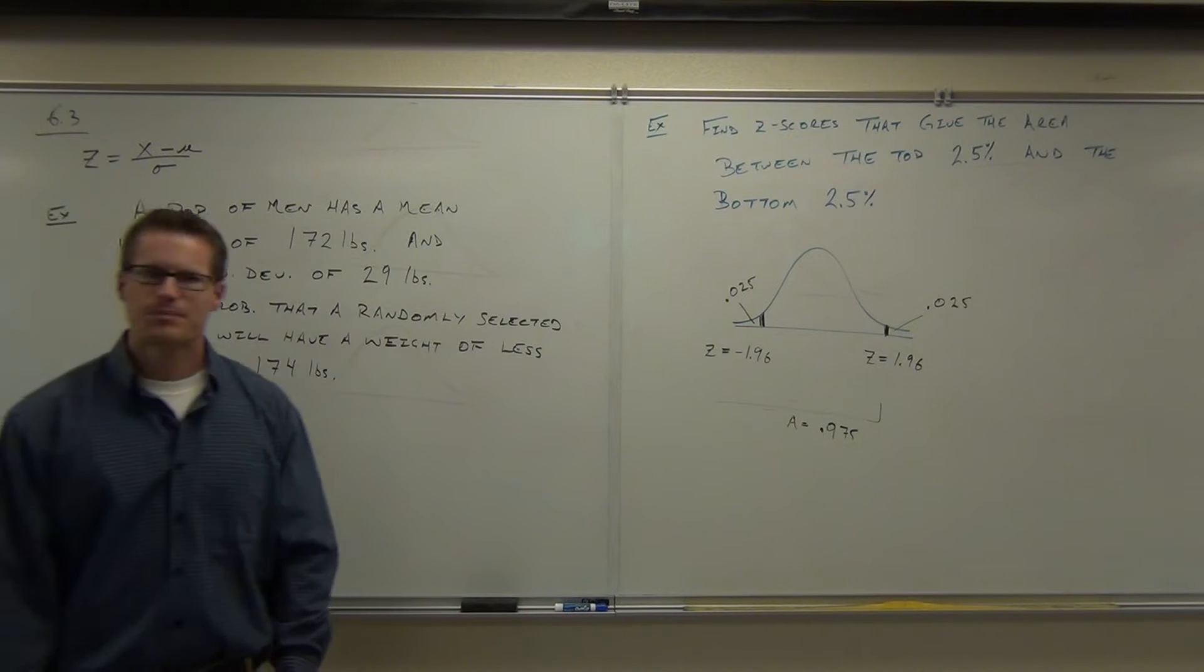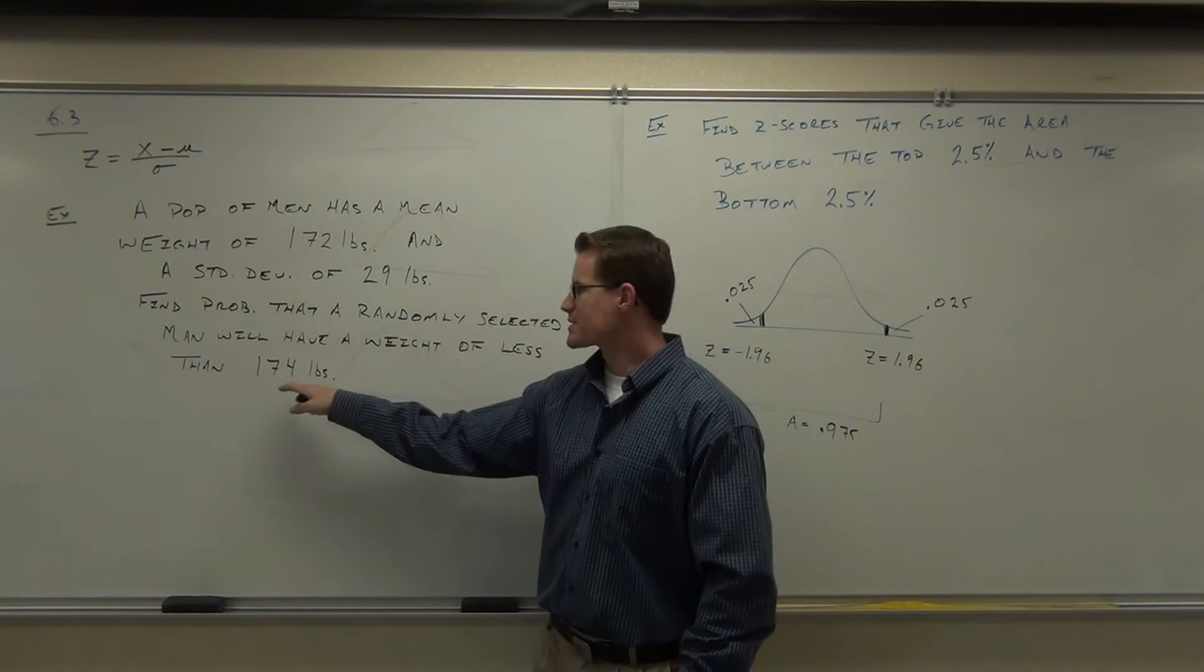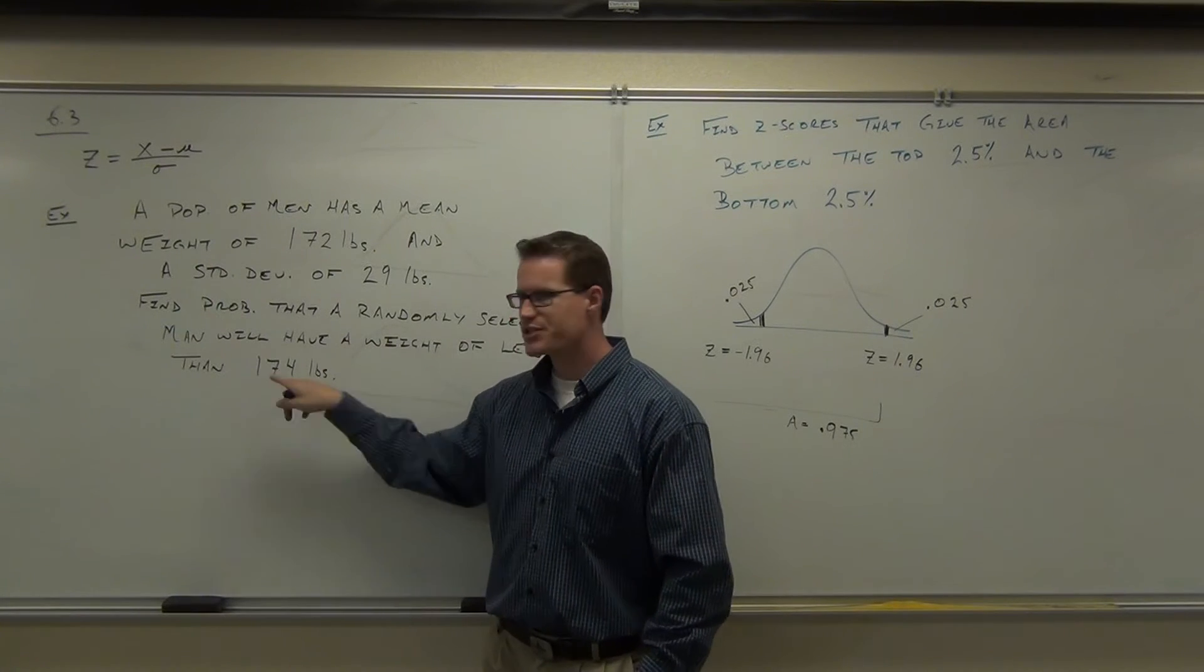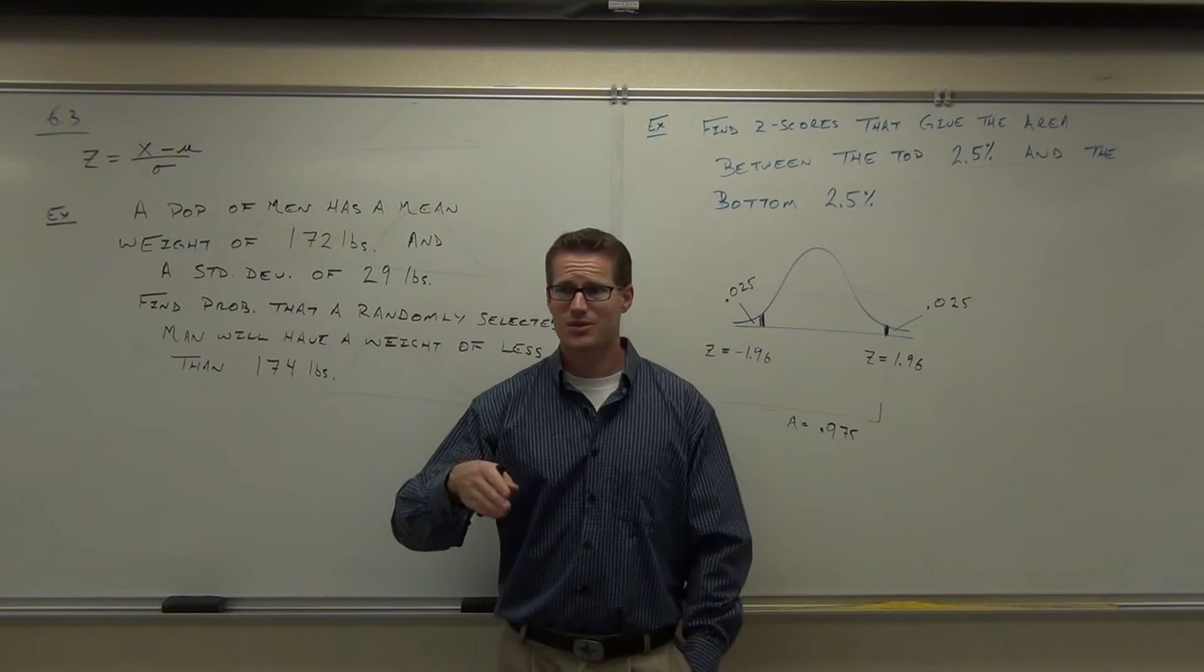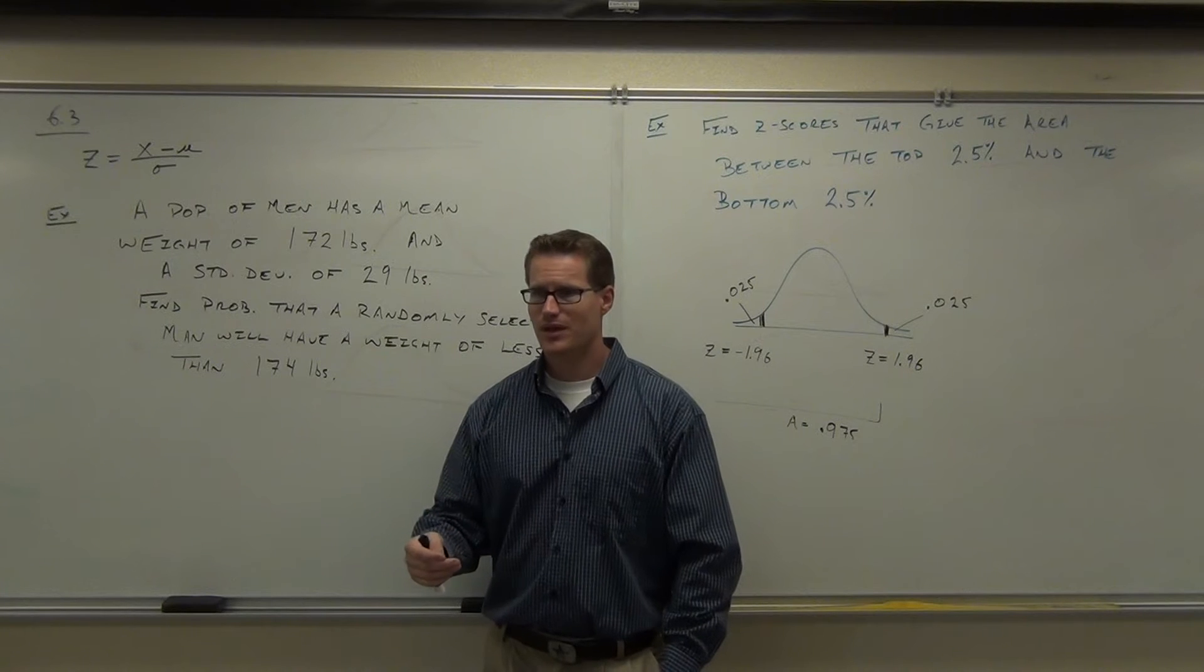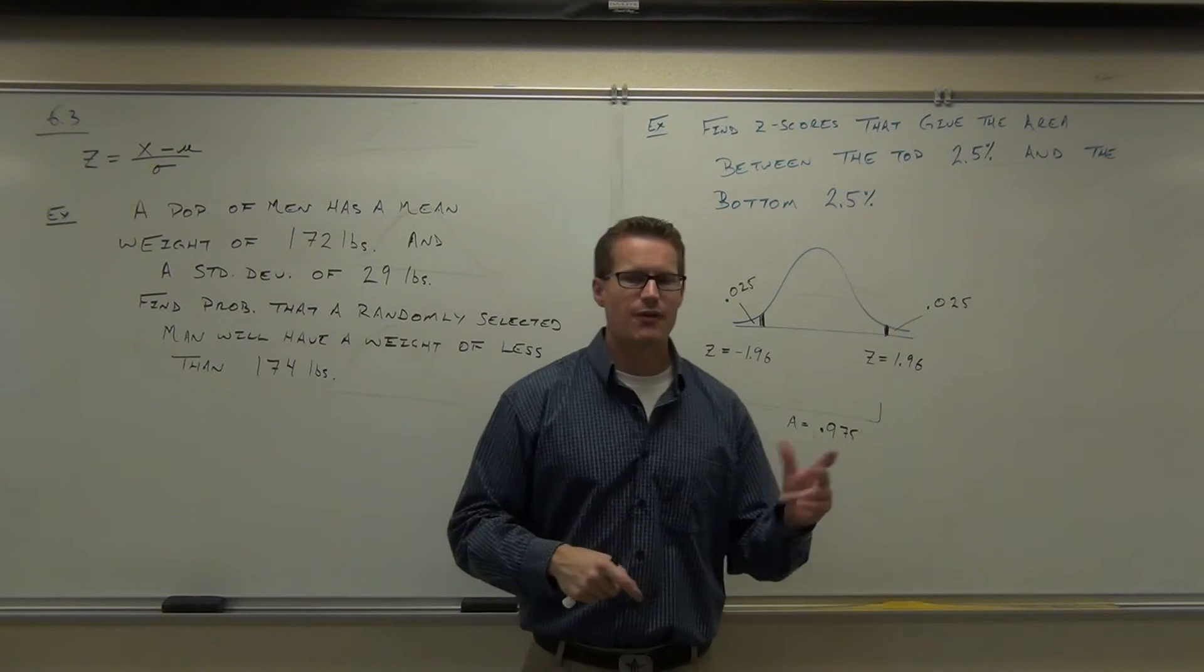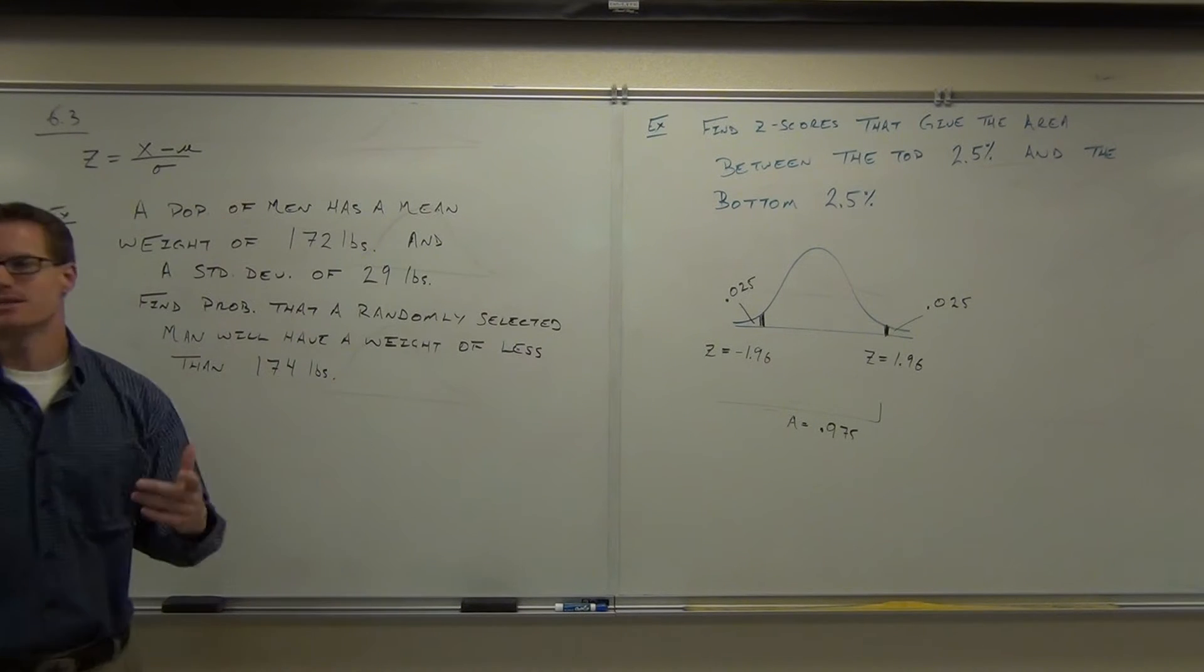What I want to know is the probability that a randomly selected man from this population will have a weight of less than 174 pounds. Before we draw a picture, we need to translate this thing into something that's going to fit on a standard normal distribution. You can't look up 174 on your table. So you have to translate this to standard normal. What does that for us? Find a z-score.